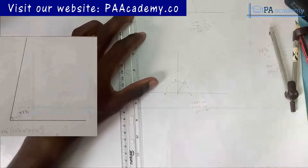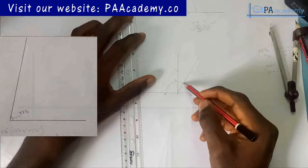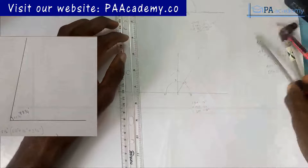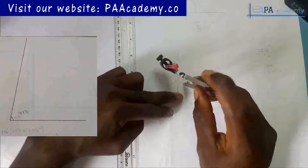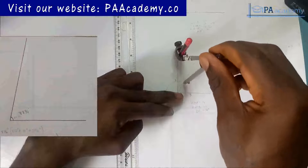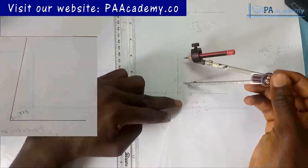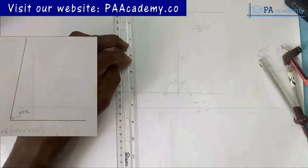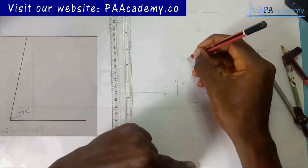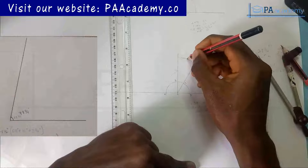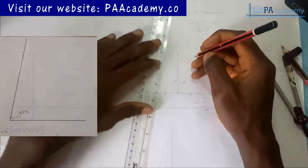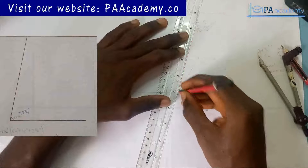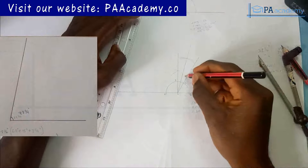Now what we want to do is bisect angle DOC. DOC is 30 degrees, so bisecting it will give us 15 and 15. I bring back my compass, place it on point C and draw an arc, then with the same length come to point D and draw another arc. From the point of intersection, draw a line to O. You have to be very careful to place it at the center of the intersection.